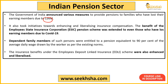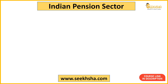The Employee State Insurance Corporation pension scheme benefits were extended even to those who lost earning members due to COVID. Dependent family members of such earning members were also provided a pension of 90% of the average daily wage. Additionally, the Employees' Deposit Linked Insurance scheme benefits were also enhanced and liberalized to support the families.